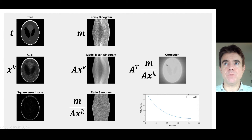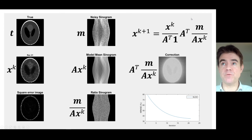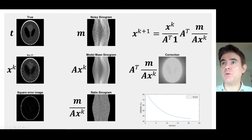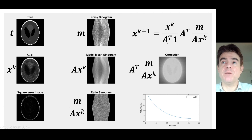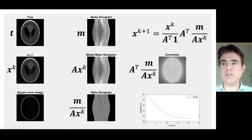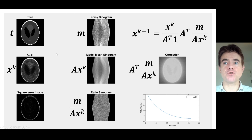And then finally we multiply — but first we divide by the sensitivity image — to get the next update. So that's the complete algorithm, which I've just coded up live in this video. We're doing Radon to forward project, doing the ratio, back projecting using A-transpose, multiplying by the current reconstruction to get the next update, and dividing by a back projection of unit data — just a sinogram filled with ones. I've also calculated a squared error image comparing the reconstruction to the true, and I'm plotting a normalized root mean square error as a function of iteration to track progress.